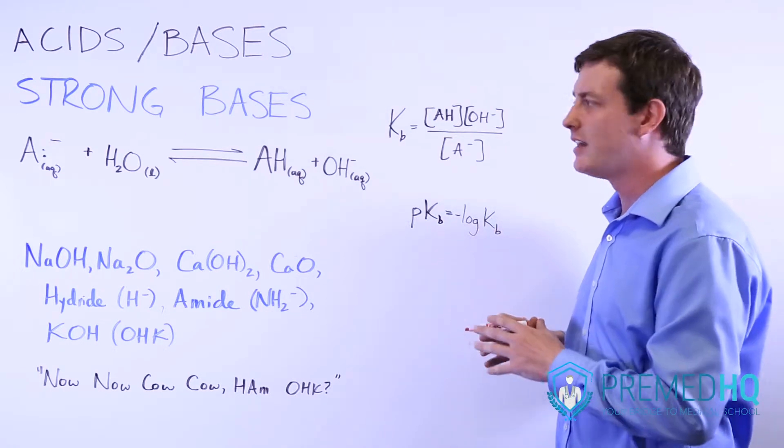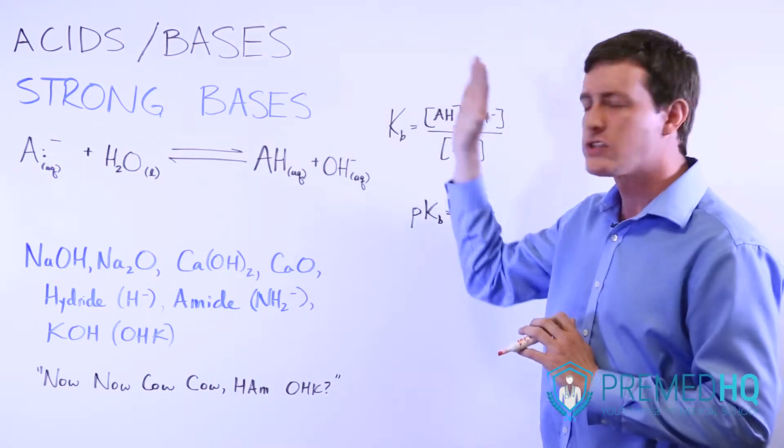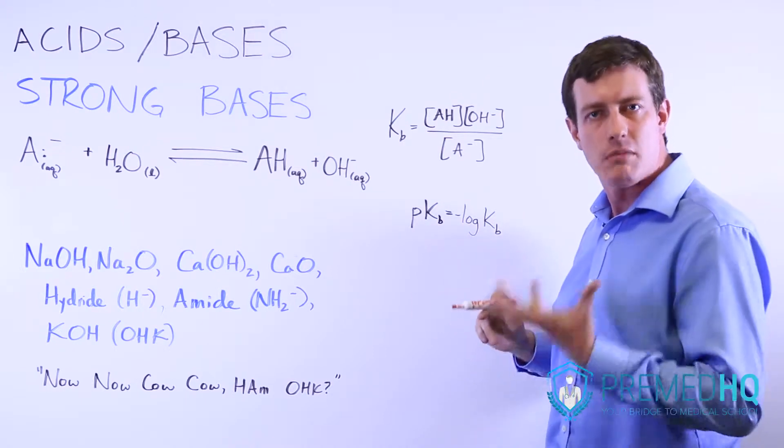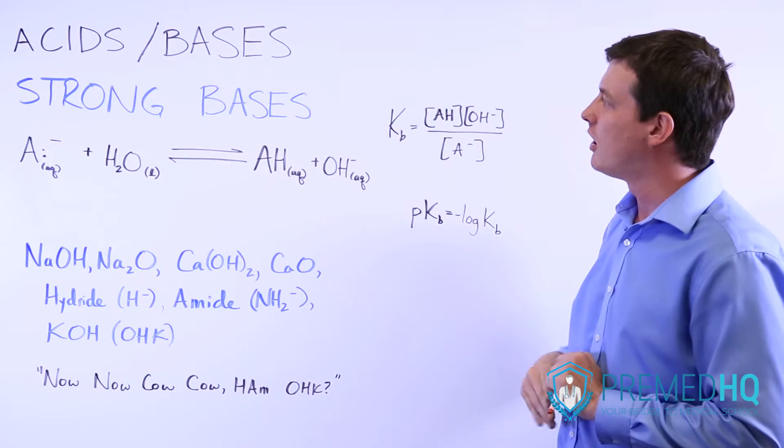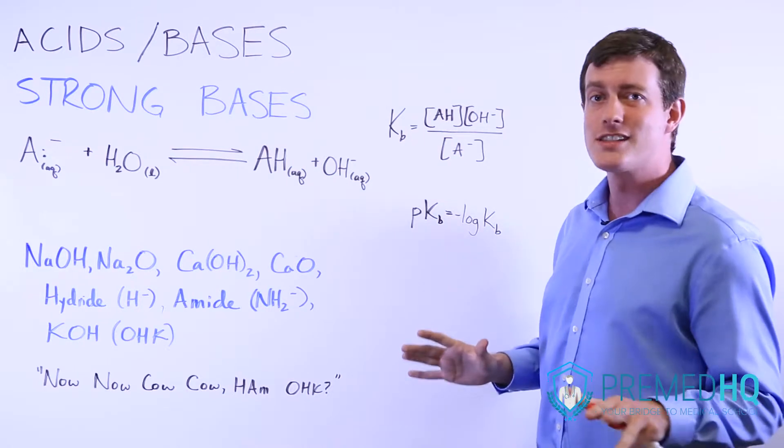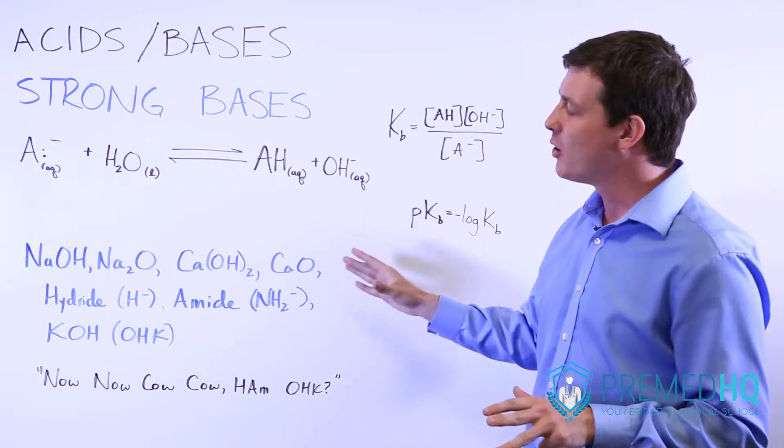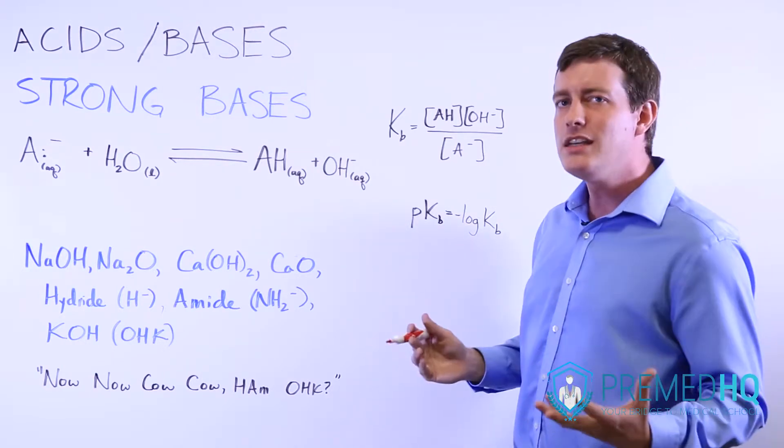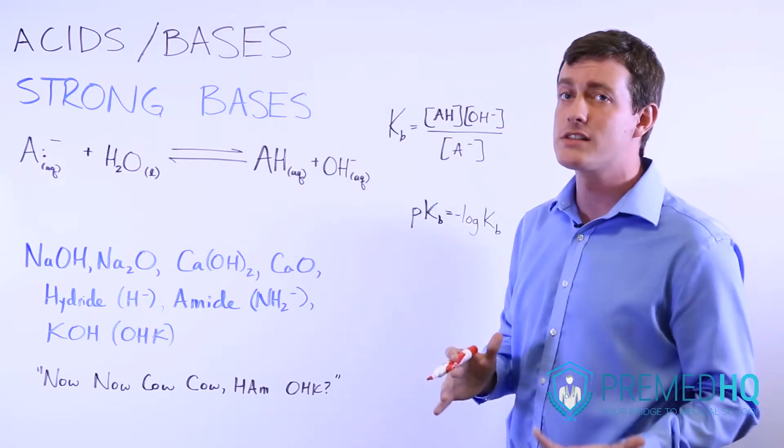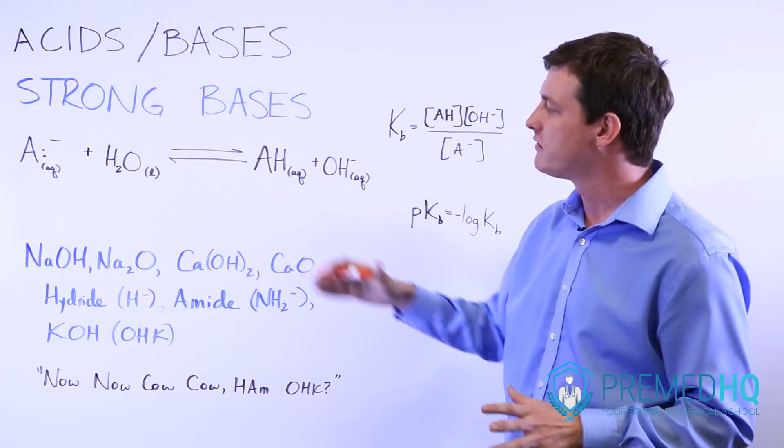For general chemistry on the MCAT, there's a list of strong bases that you should be able to recognize as strong bases and assume that they completely dissociate and pick up all of the protons possible. And those strong bases are listed in a lot of different ways, but I think it's good to go over a mnemonic. Now, I'll confess, this is probably one of the silliest mnemonics I've ever developed, but I'm going to teach it to you now because over many years I've had students come back and say that they still remember the list of strong bases for the MCAT because of this mnemonic. And it's not an easy list to remember otherwise unless you find a way to simplify it.